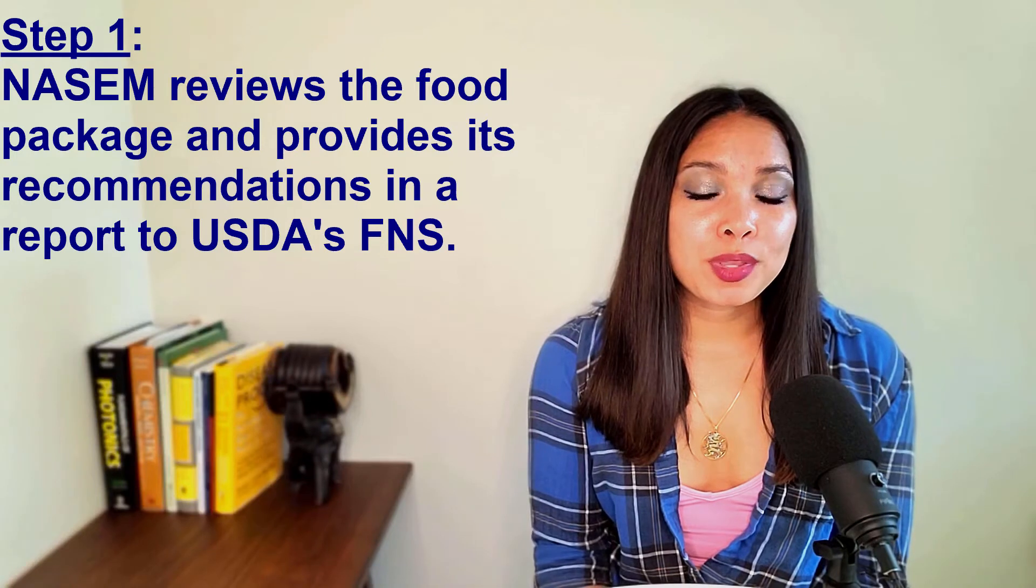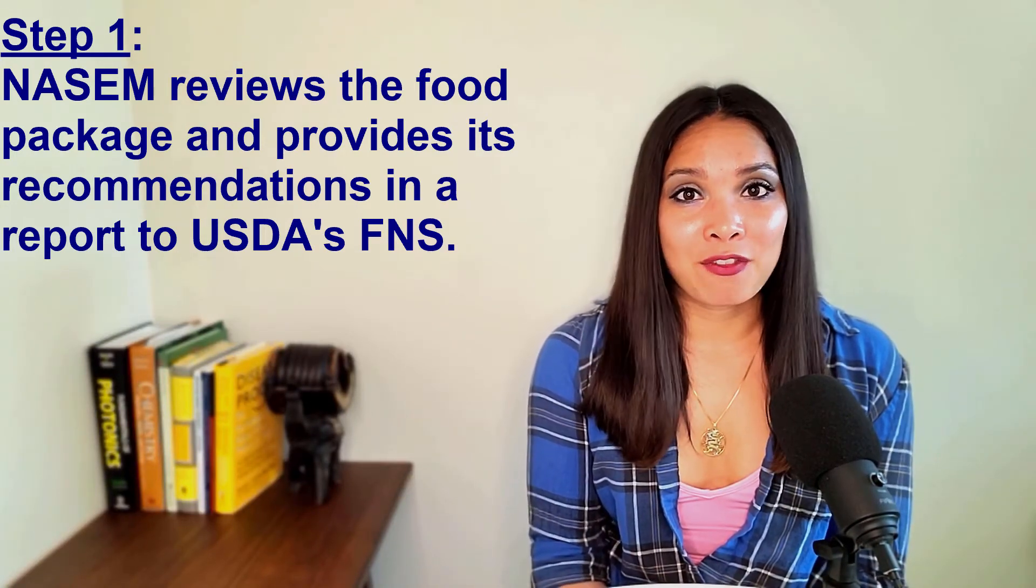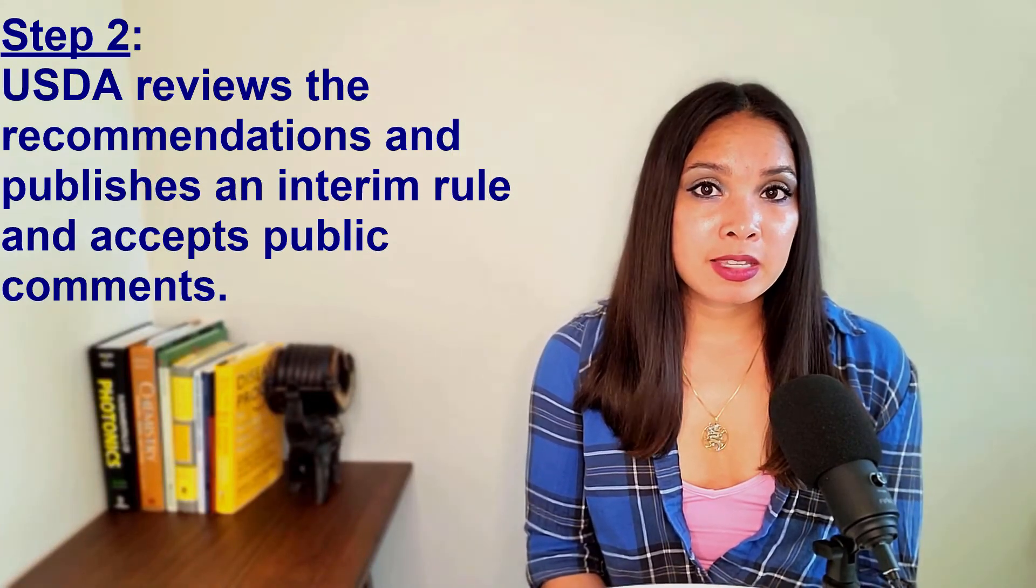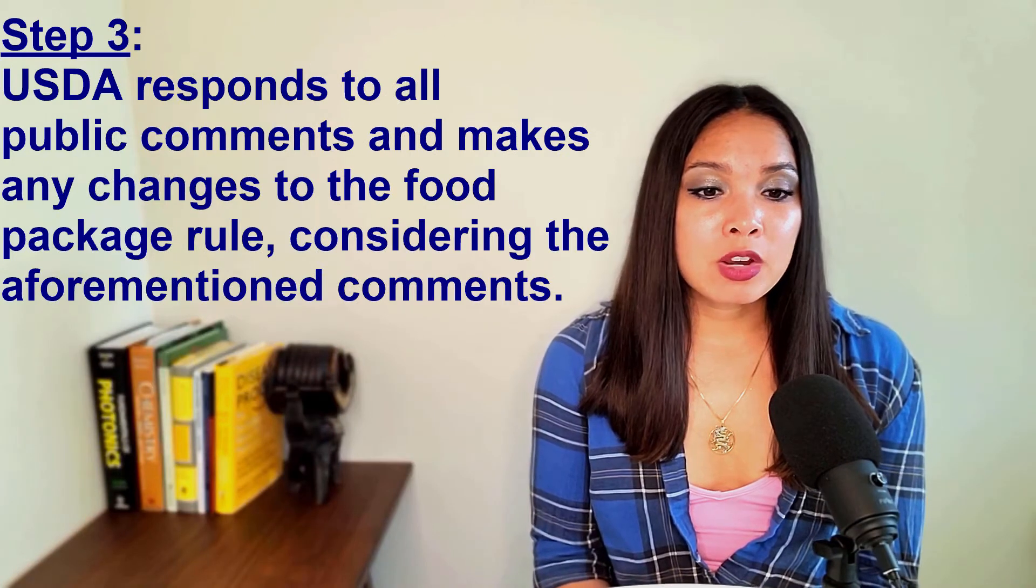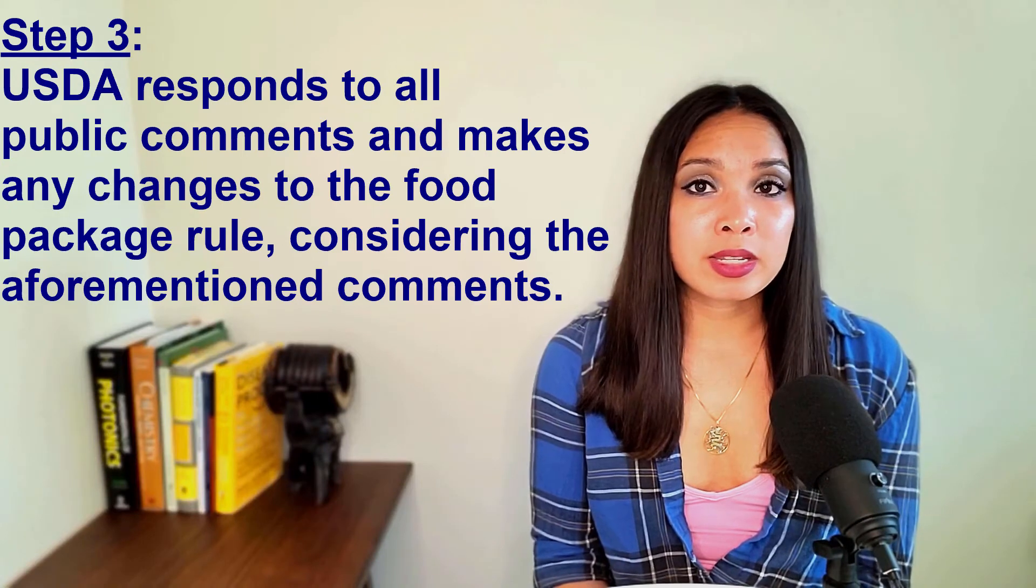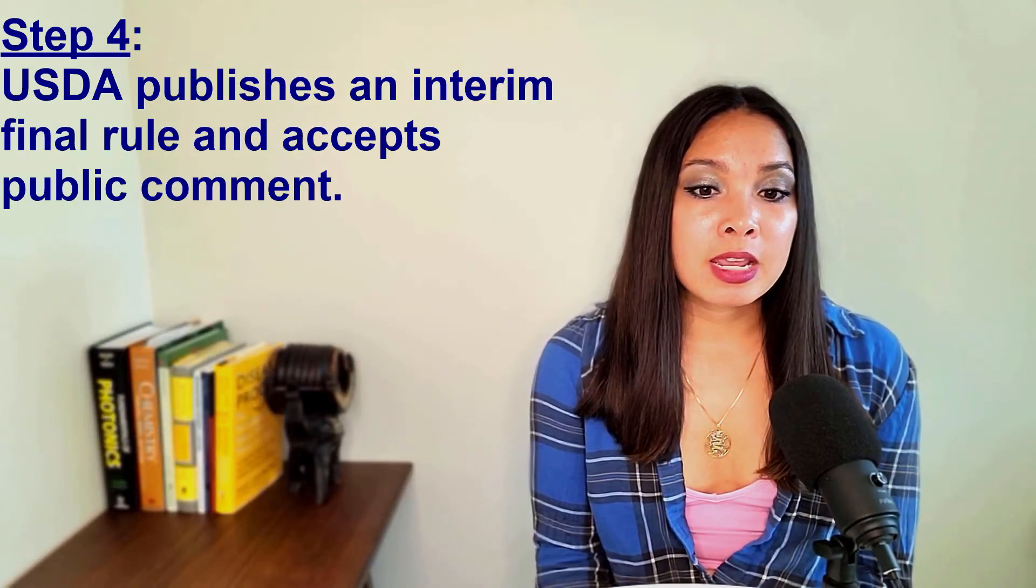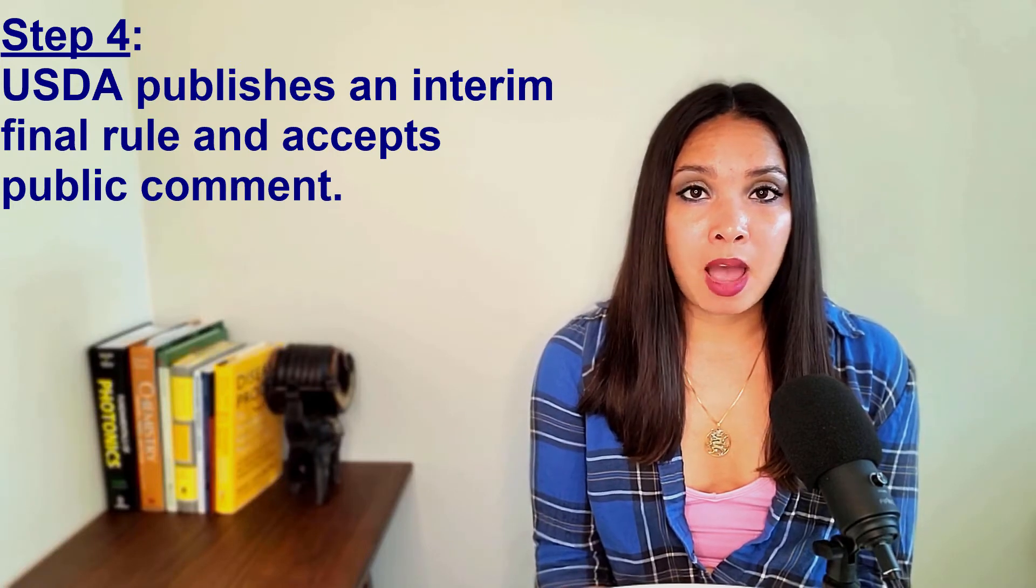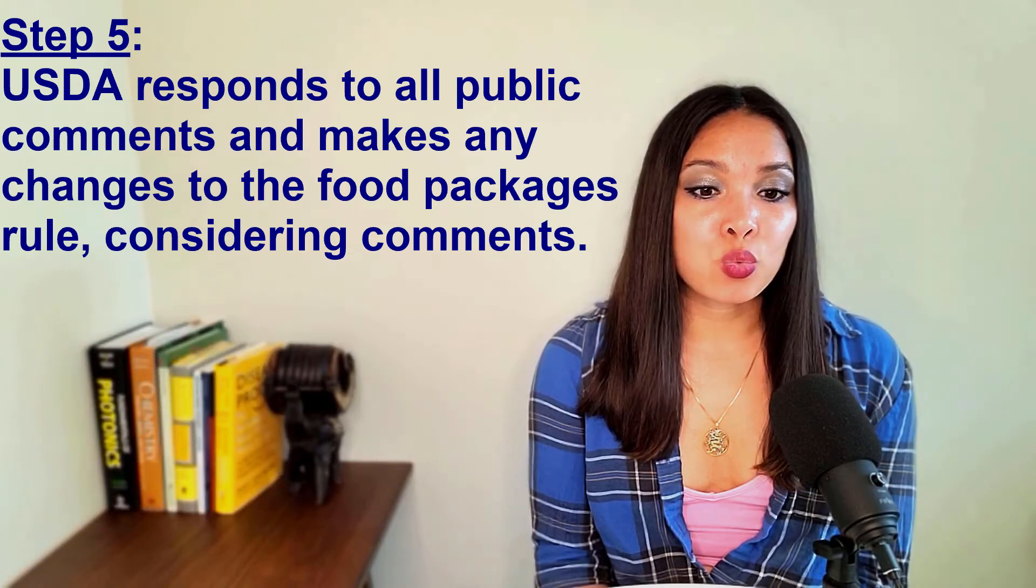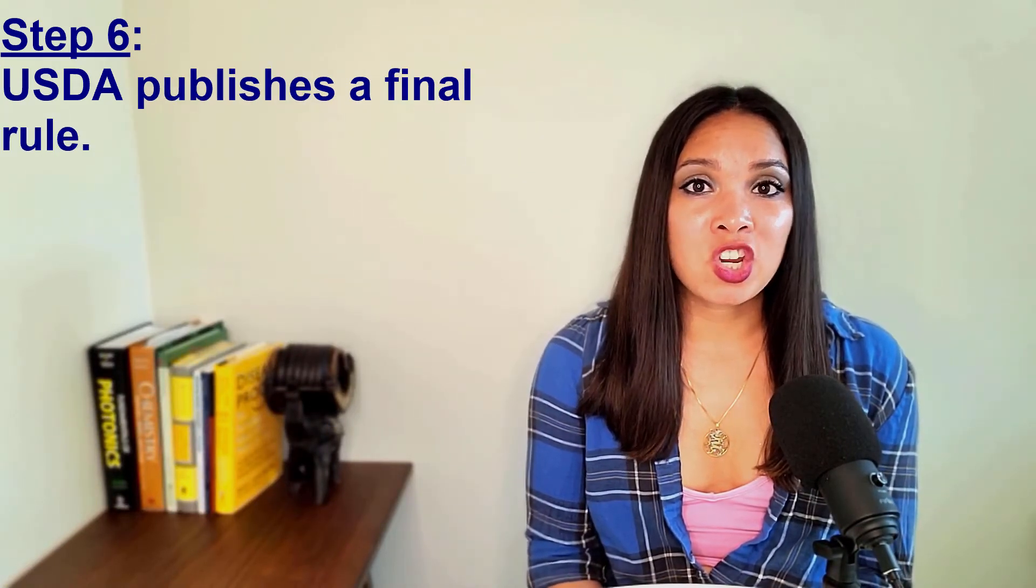Step one involves NASEM reviewing the food package and then providing its recommendations in a report to USDA's FNS. USDA then reviews the recommendations and publishes an interim rule and accepts public comments. Step three involves USDA responding to all public comments and then making any changes to the food package rule considering these comments. For step four, USDA publishes an interim final rule and accepts public comments. For step five, USDA responds to all public comments and makes any changes to the food package rule considering these comments. And then step six is USDA's publication of a final rule.